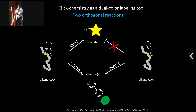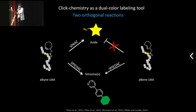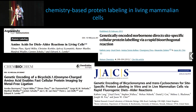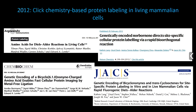The tetrazine ligation is much faster than the azide ligation. What's also good about these reactions is that they are orthogonal to each other. You can imagine an experiment where one protein is labeled with an alkyne UAA — which only reacts with tetrazines — and another protein labeled with an azide UAA using a different chemistry. This enables dual-color labeling. This was first demonstrated in bacteria over 10 years ago, where two different populations of E. coli expressing these two different chemistries were labeled in a mutually orthogonal way.